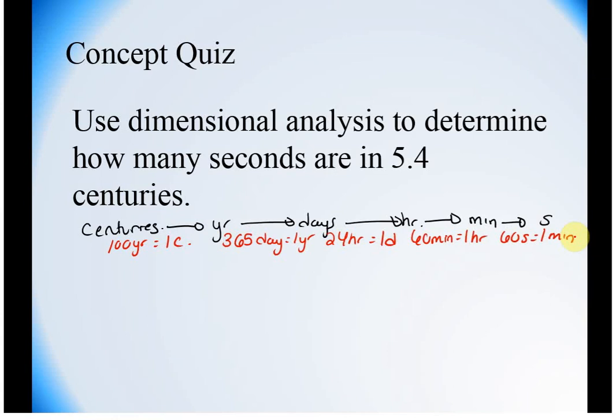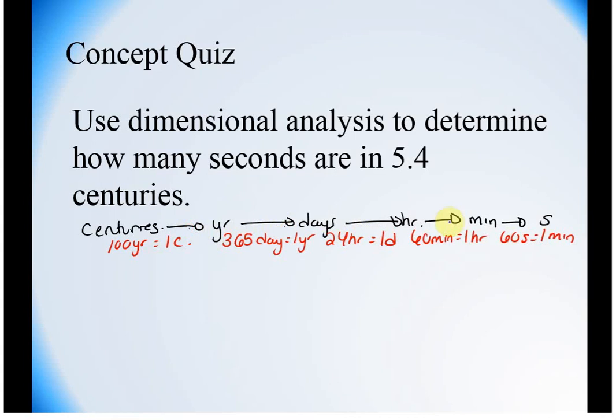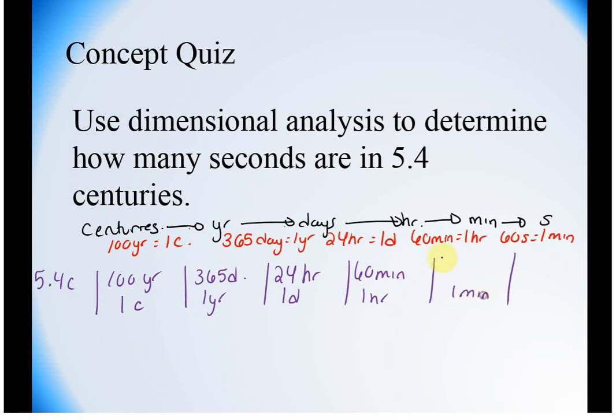Okay? And so we could set this up. We have one, two, three, four, five steps. So we have one, two, three, four, five columns. 5.4 centuries. One century is equal to 100 years. One year has 365 days. One day has 24 hours. One hour has 60 minutes. One minute has 60 seconds.